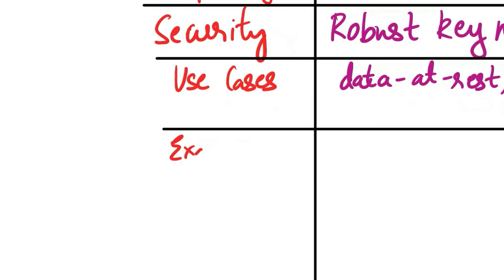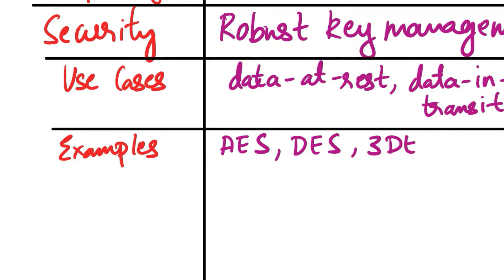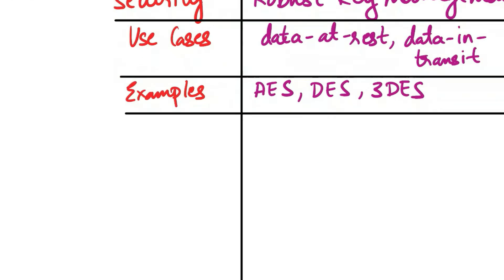Next, examples. Symmetric examples include AES (Advanced Encryption Standard), DES (Data Encryption Standard), and Triple DES. Asymmetric examples include RSA, ECC (Elliptic Curve Cryptography), and algorithms used in HTTPS, SSH, and digital signatures.